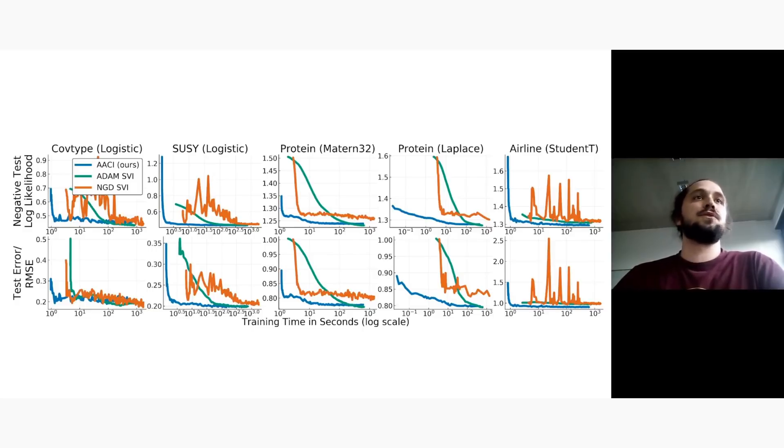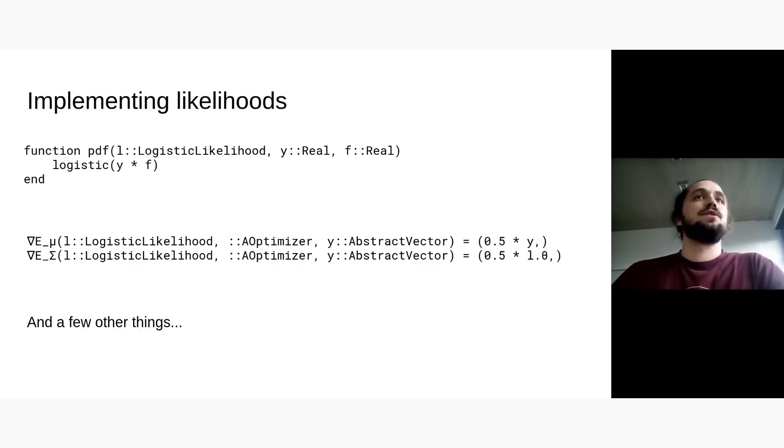And this also scales to big data when you start to use sparse Gaussian processes. But this is a bit interesting. So to implement new likelihoods, you need some derivations. I'm actually working on making this a bit automatic, but this is an ongoing research project. But it doesn't require so much effort in the end.